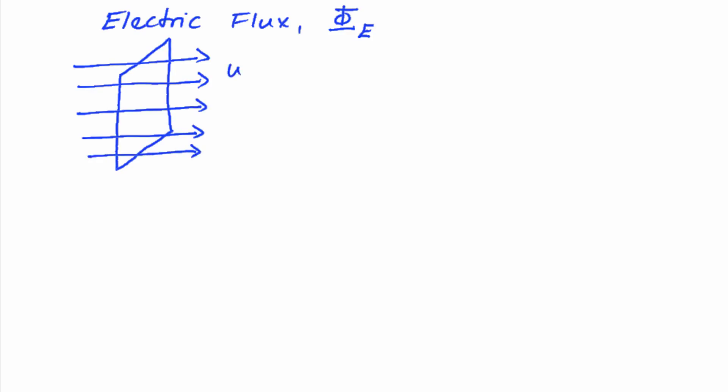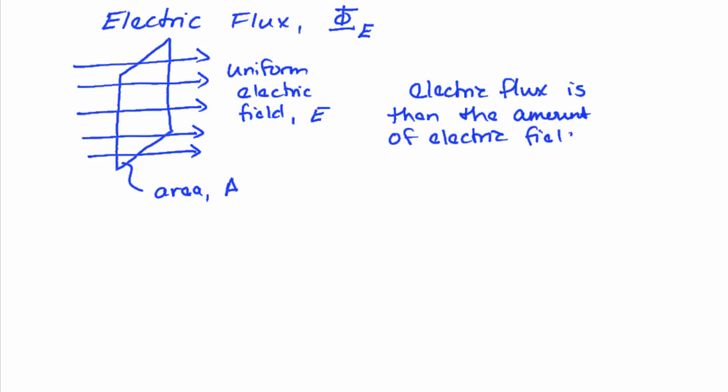In this example I have a uniform electric field, which I'll call E, and the surface has an area which I'll call A. Electric flux is then the amount of electric field passing through a surface.